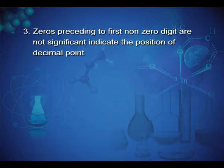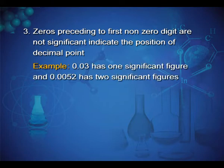Zeros preceding the first non-zero digit are not significant. Such zeros indicate the position of the decimal point. This is the third rule. Example: 0.03 has 1 significant figure and 0.0052 has 2 significant figures.